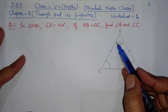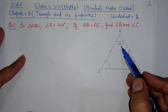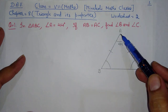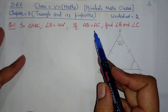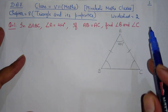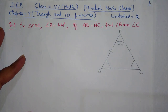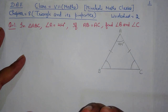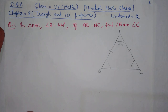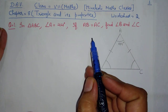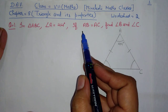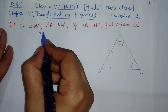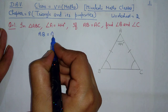If AB is equal to AC — this is the AB side and this is the AC side — these are equal. We have to find angle B and angle C, meaning we have to find their values. Let's start the question: if AB is equal to AC.